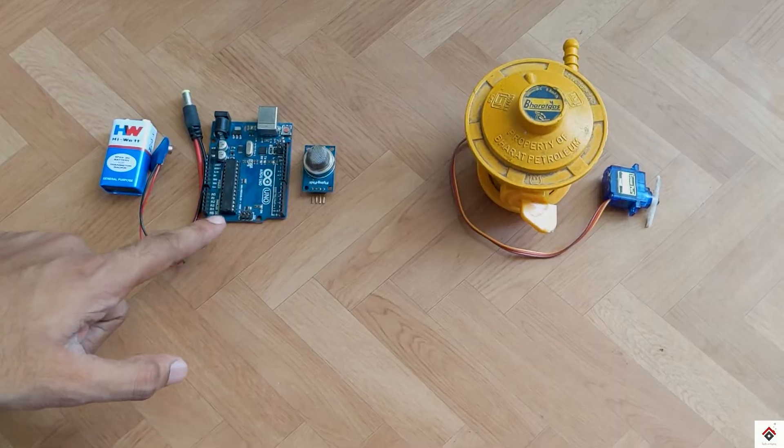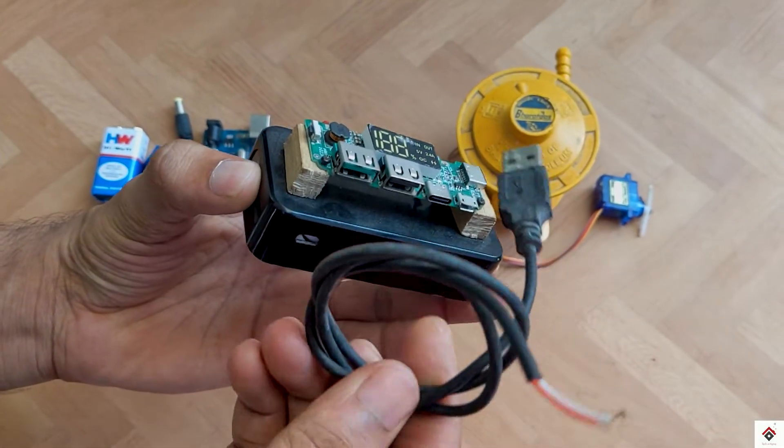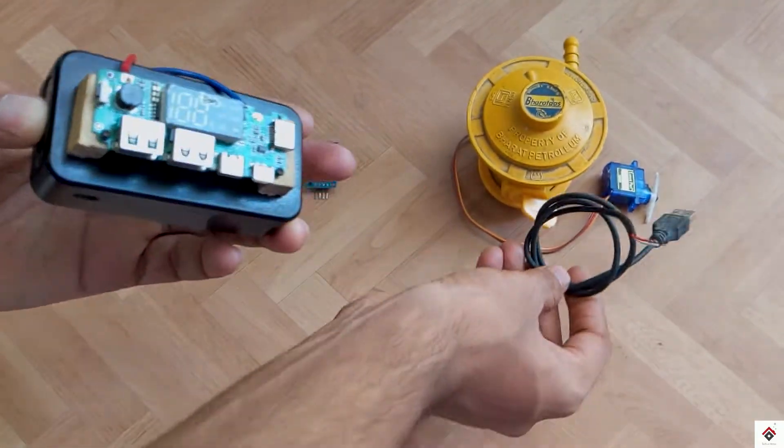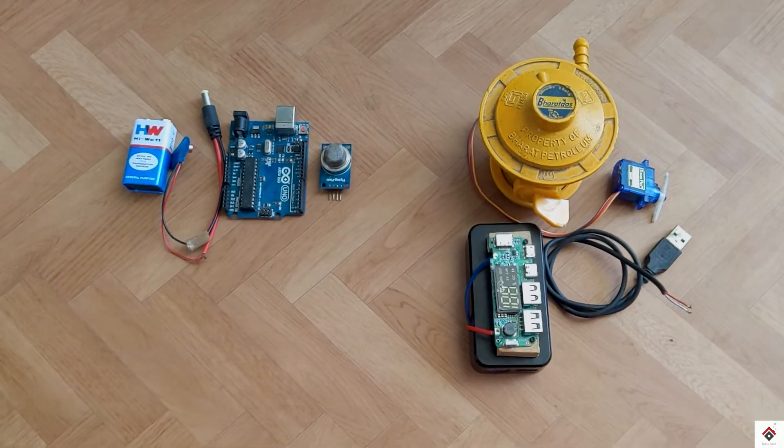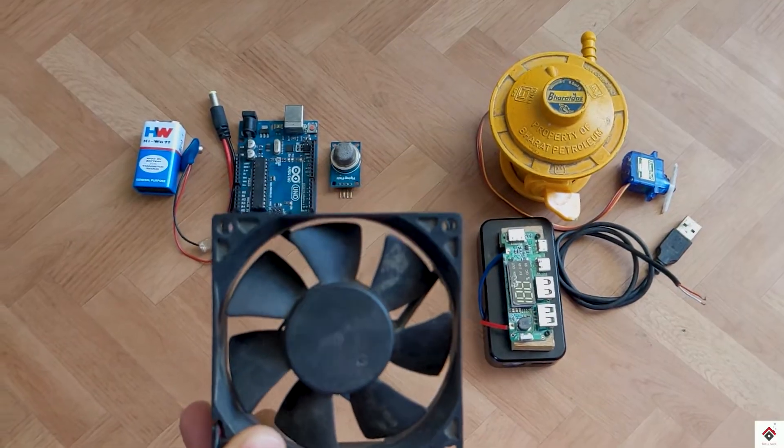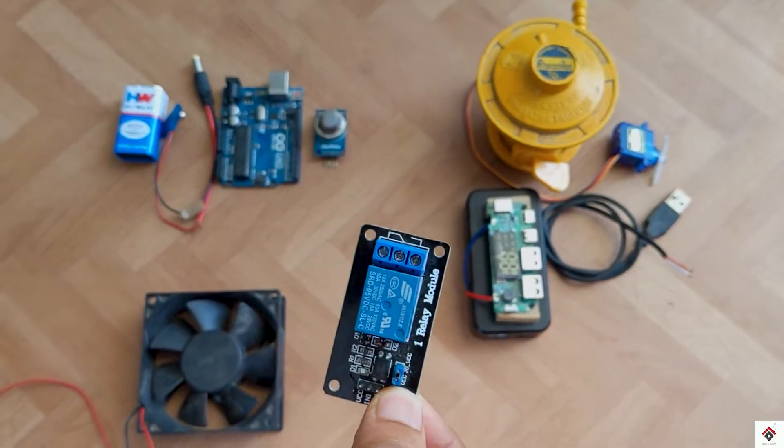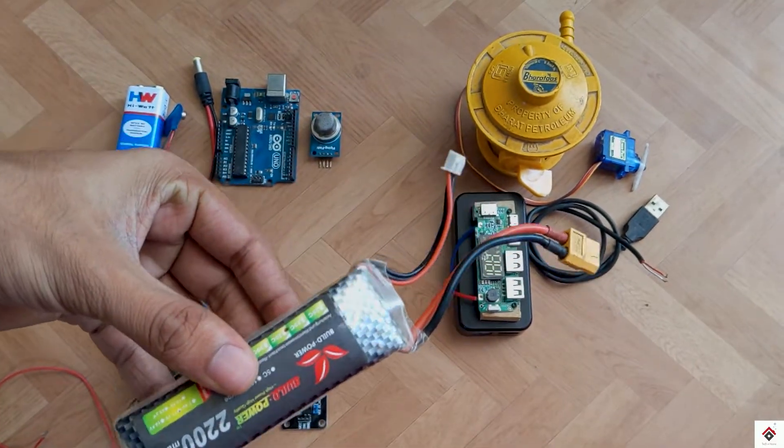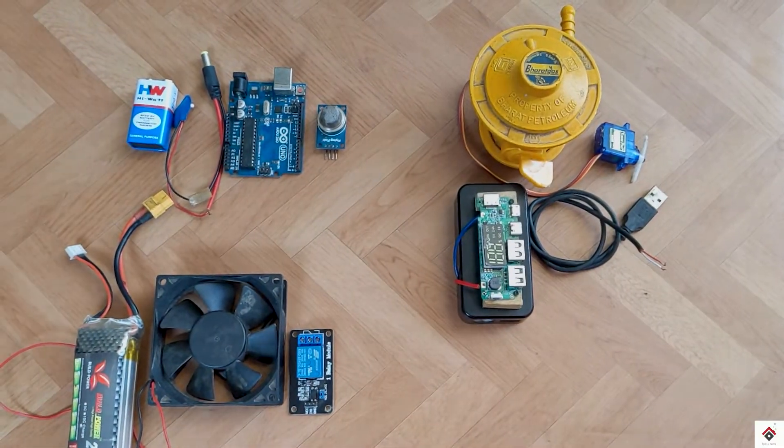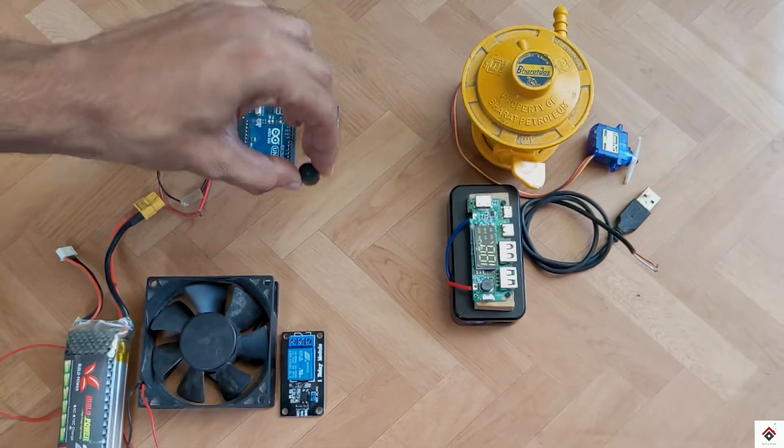To power up the servo motor, the Arduino 5-volt power is not sufficient. As an external 5-volt supply, I'll be using this power bank and a waste USB cable. Next, I'm using this exhaust fan, a 5-volt relay module, a power supply according to the fan specifications which is 12 volts in my case, a small buzzer, and at last some jumper wires.